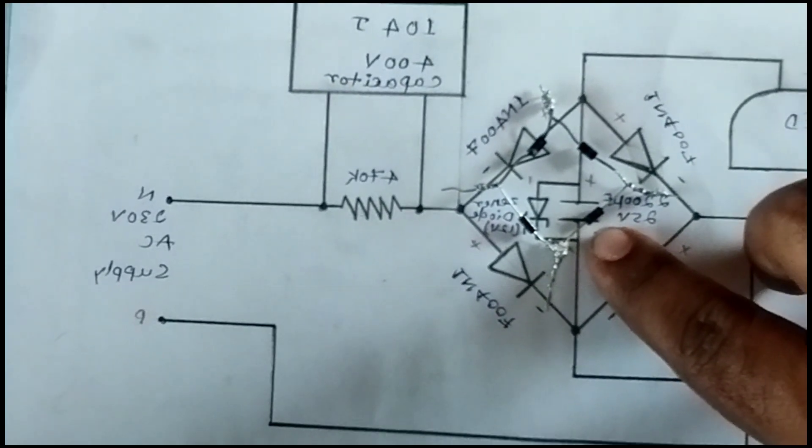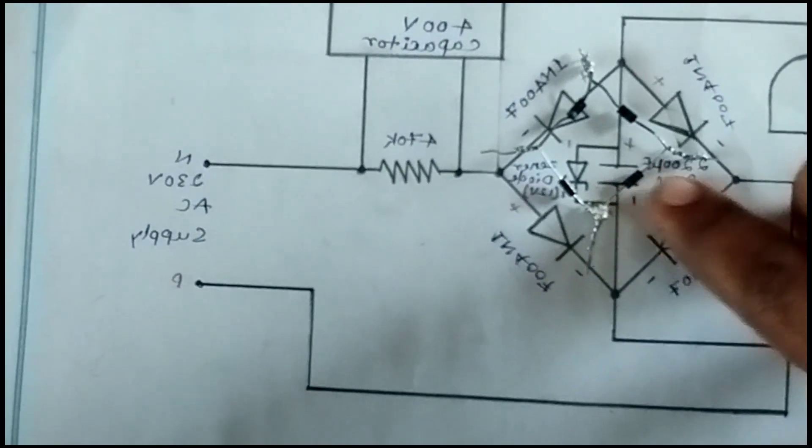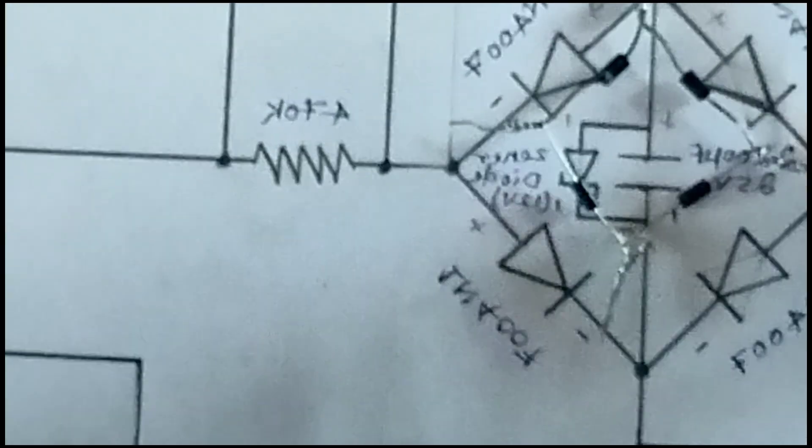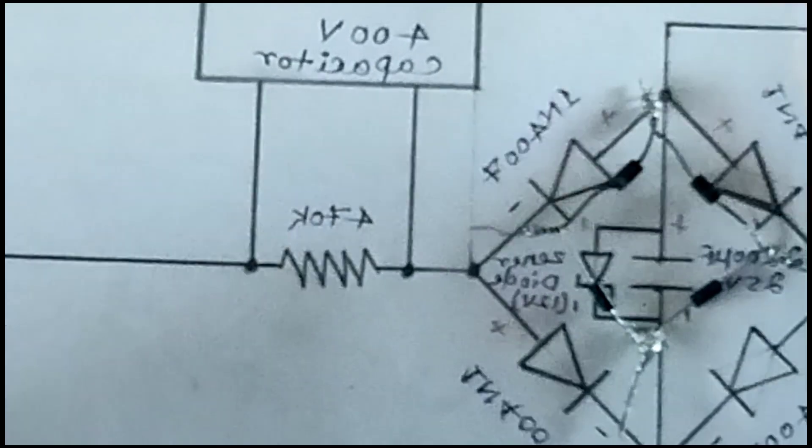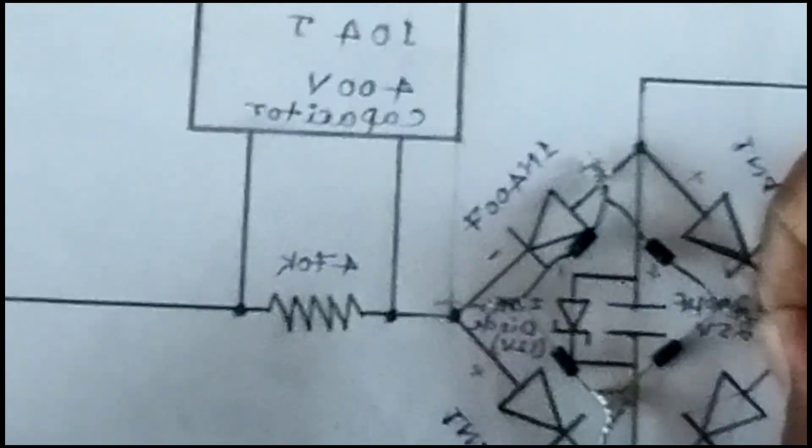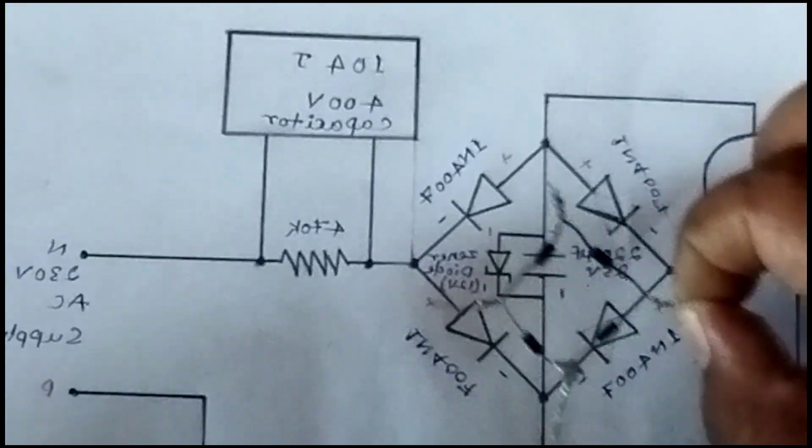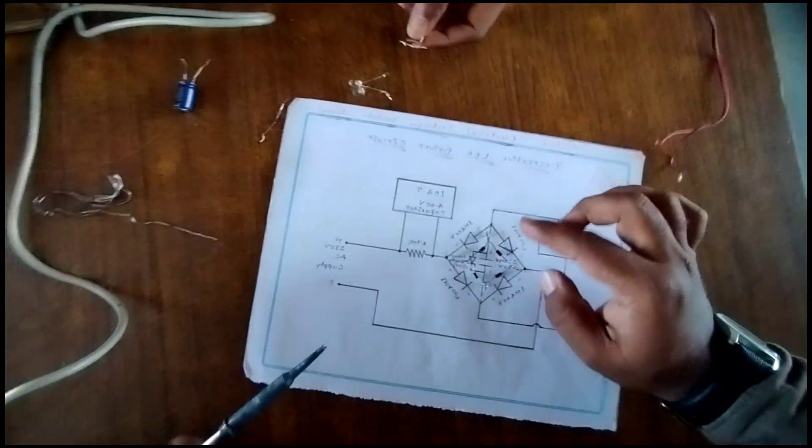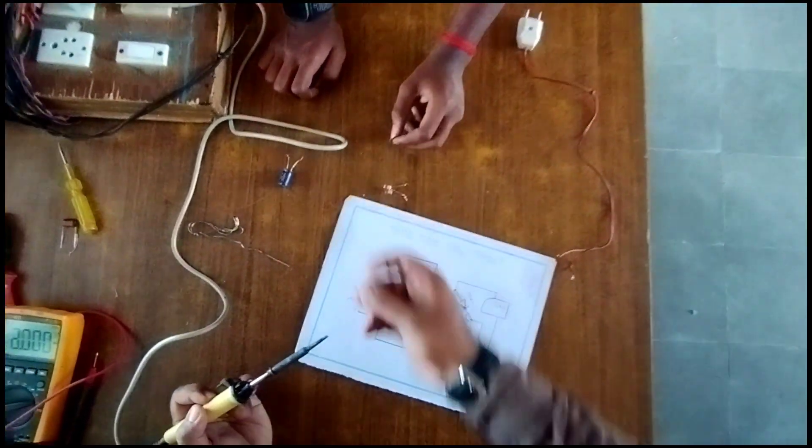Silver strip. And next, this black color is positive anode. And next, same, this is the cathode and this is the anode. Okay, totally it is the bridge rectifier. We connect bridge rectifier anode terminal to positive zener diode. Okay, you can see here zener diode.